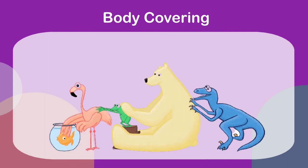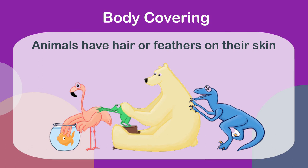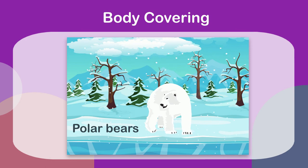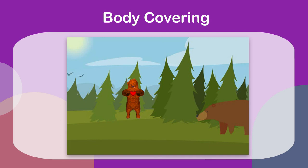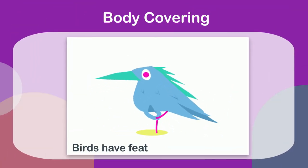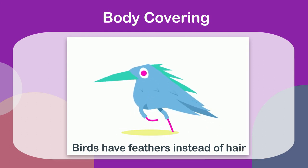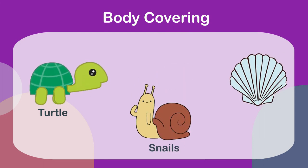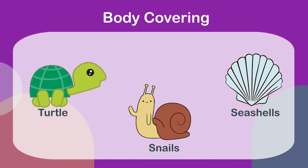Some animals use their tails to keep them warm. Many animals have hair or feathers on their skin. Those which live in cold climates, such as polar bears, have thicker hair than those living in warm climates, such as bears living in forests. Birds have feathers instead of hair. Some animals such as turtles and snails have a very hard covering on them known as a shell, which protects them from being harmed by other animals.